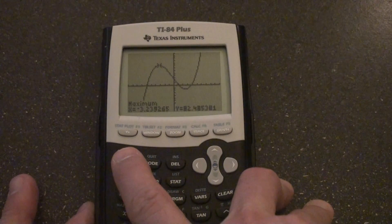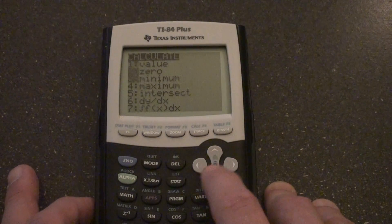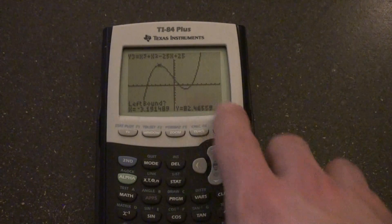Now to find minimum, we're going to do the same thing. Second, calculate. You would go to minimum, and you would do the same exact thing, except you'd be working with this point.